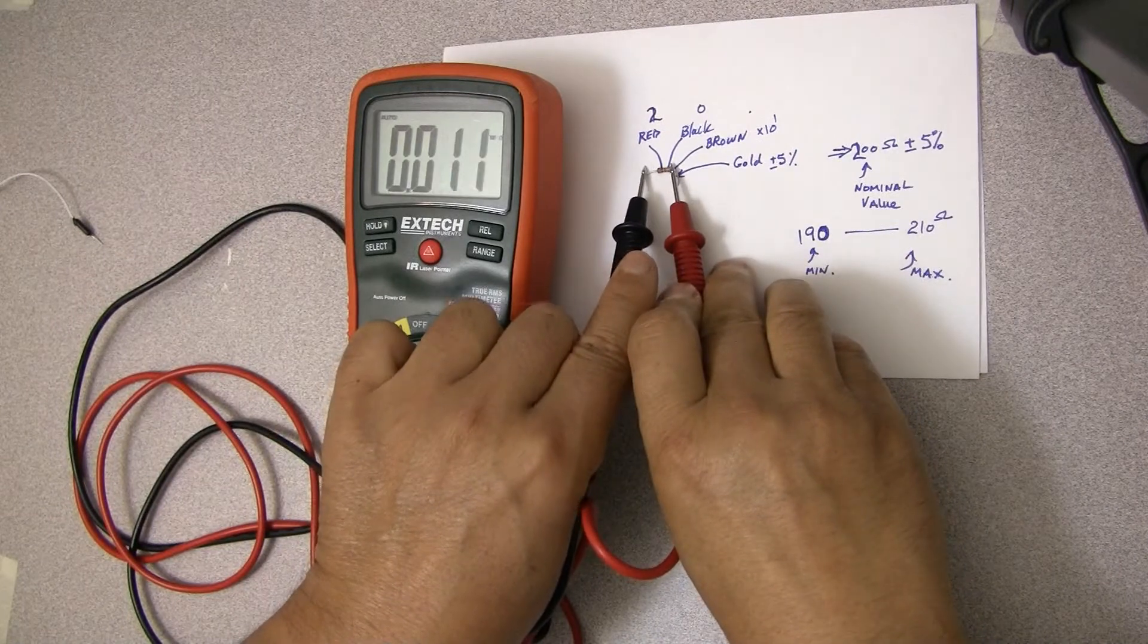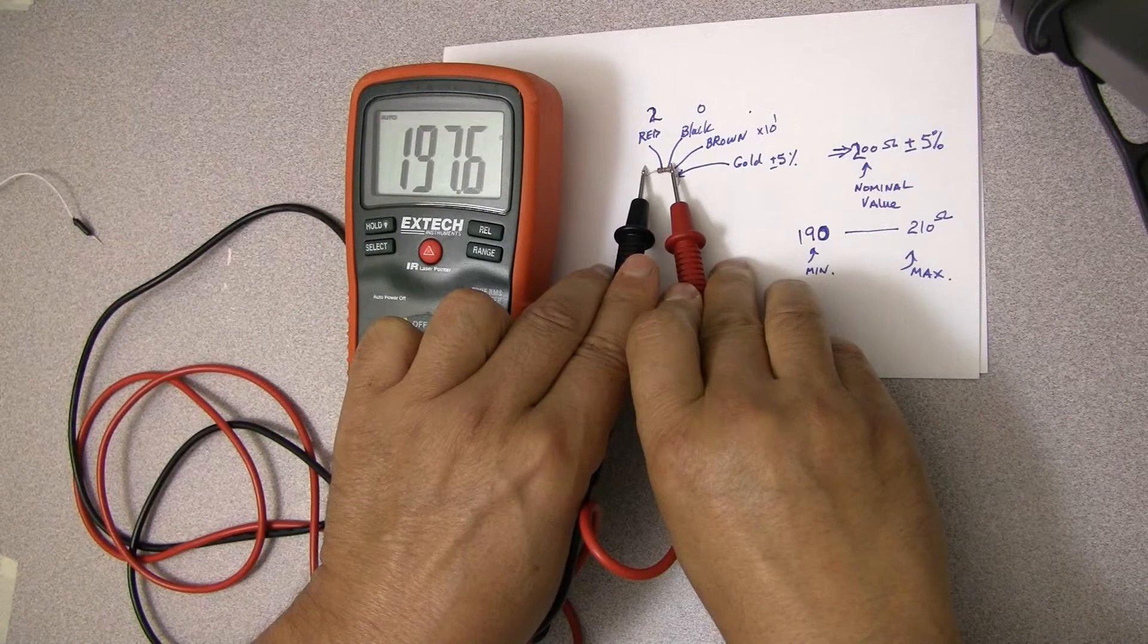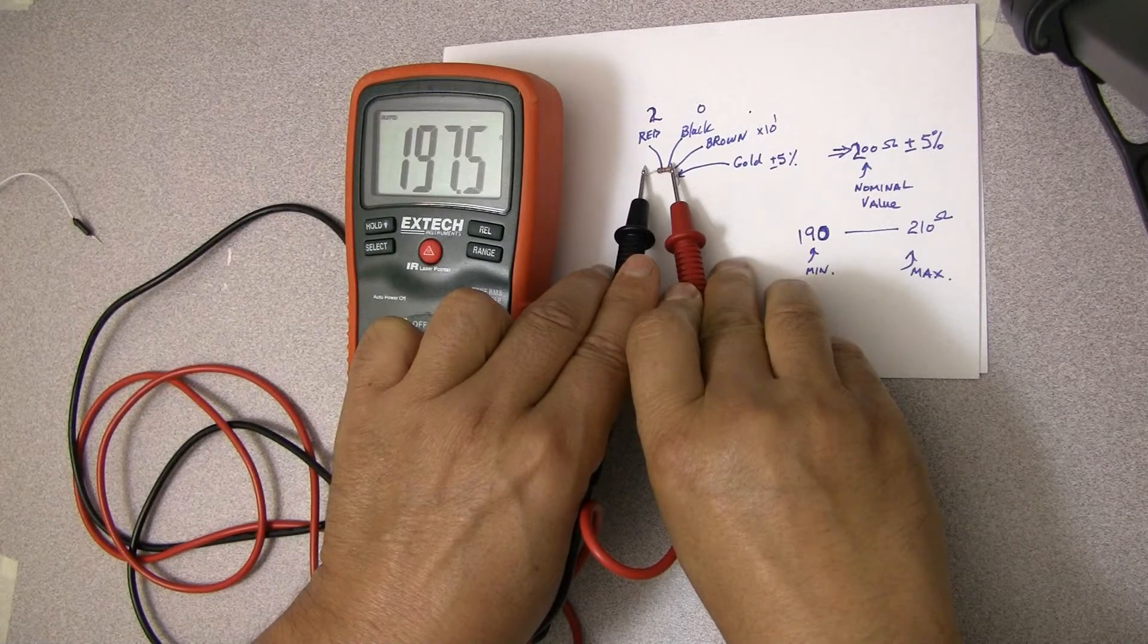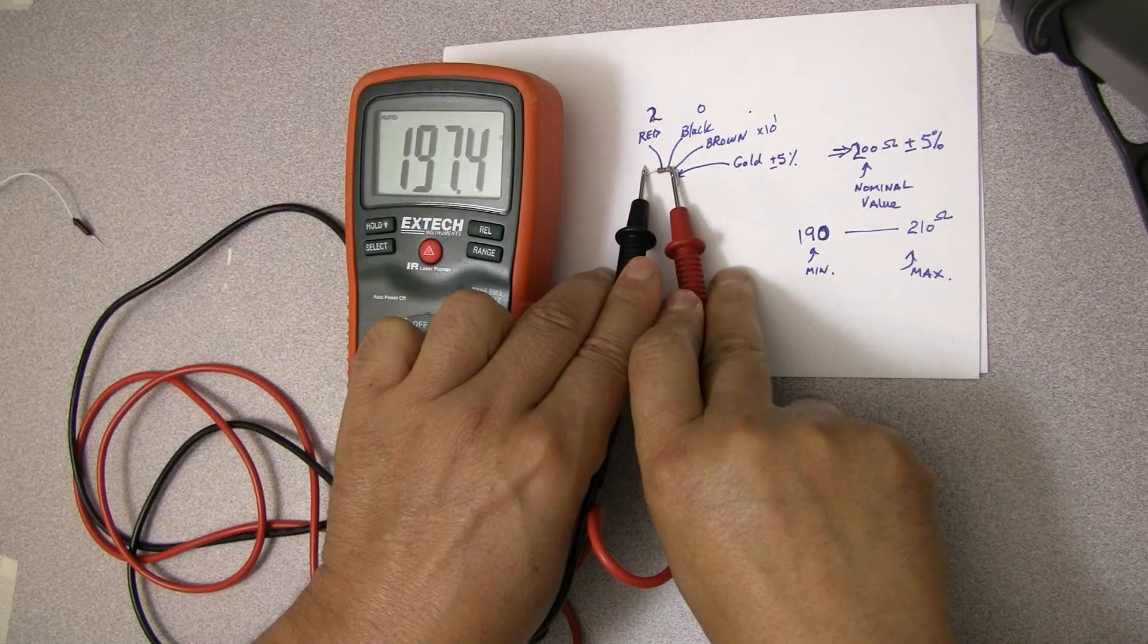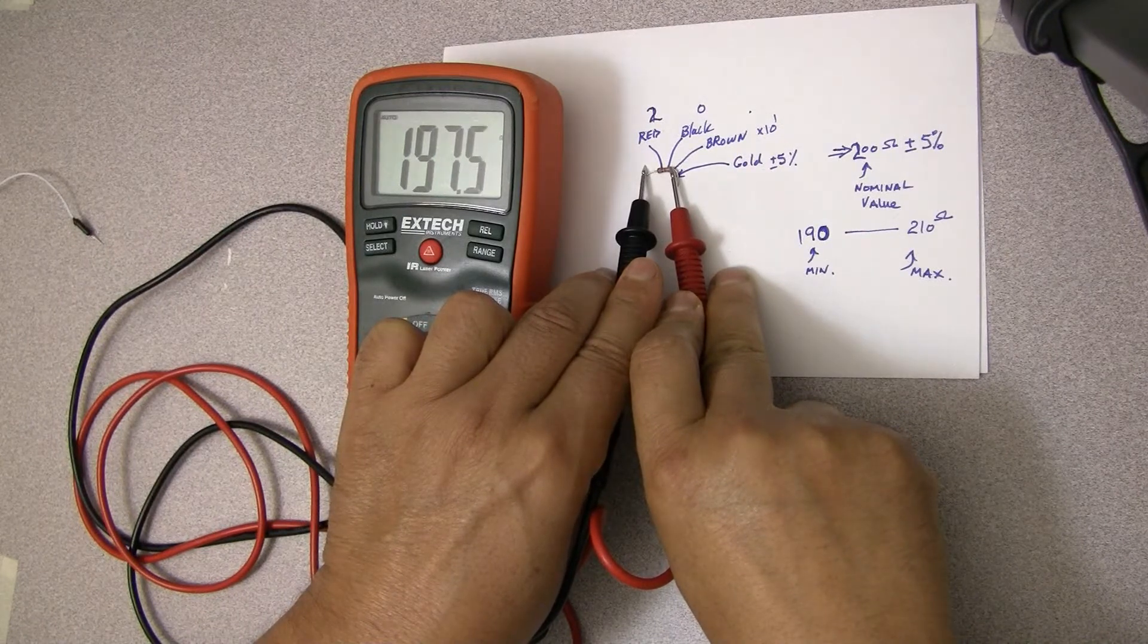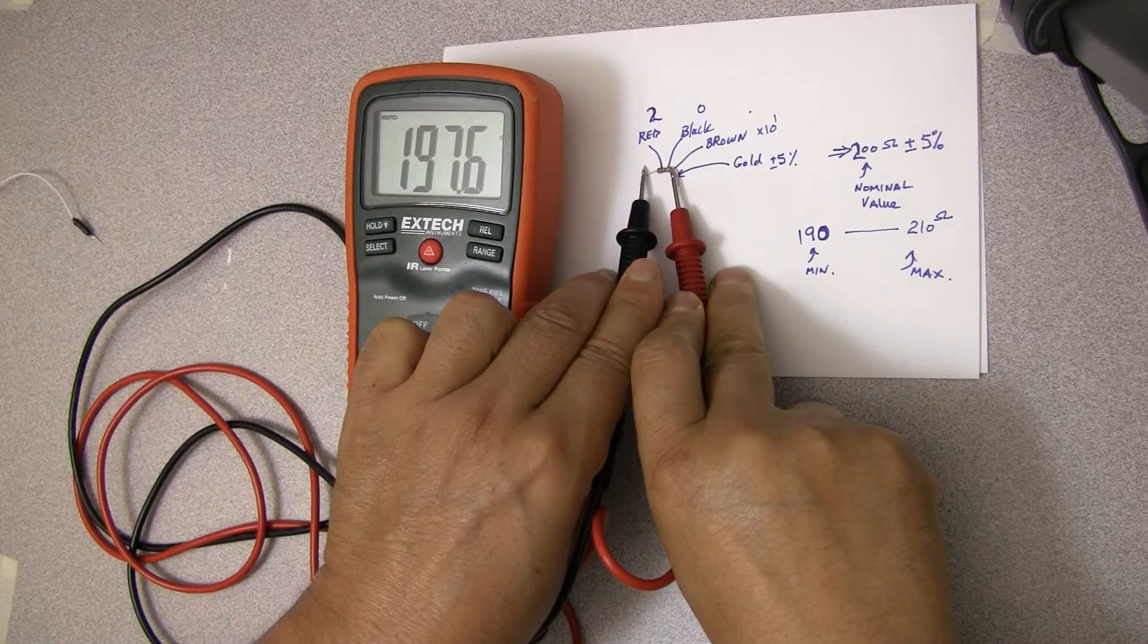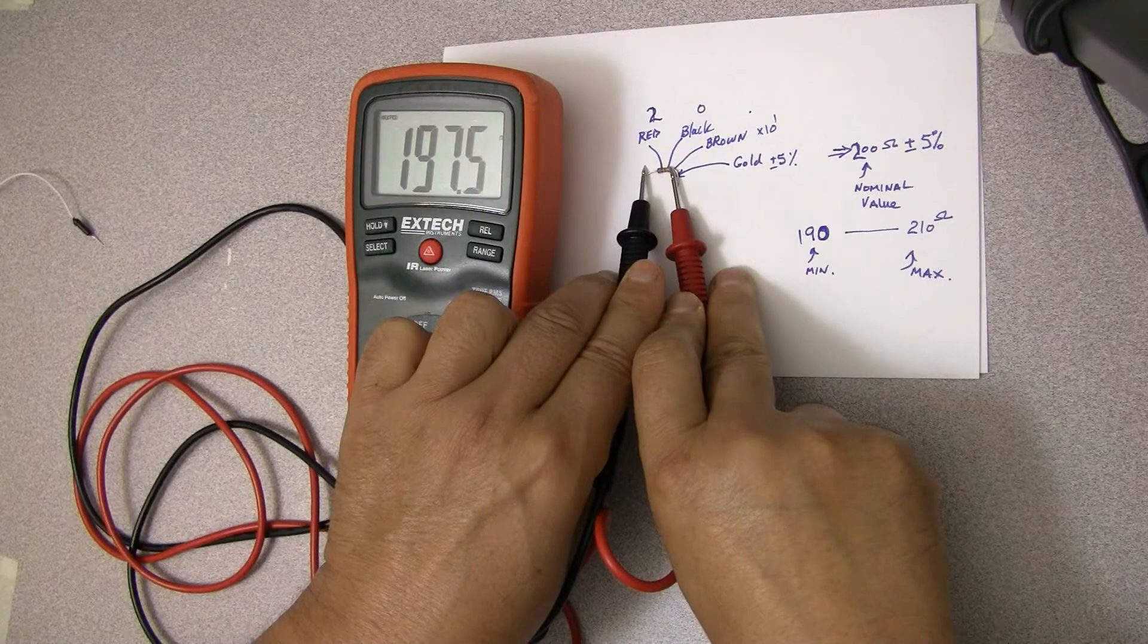I take my probes here, and I'm going to touch the two sides of the resistor and see what we see. So you read 197. And if you look at the min and the max, the min was 190, the max was 210. So this resistor is well within its tolerance, so it's a good resistor at 197.6 ohm.